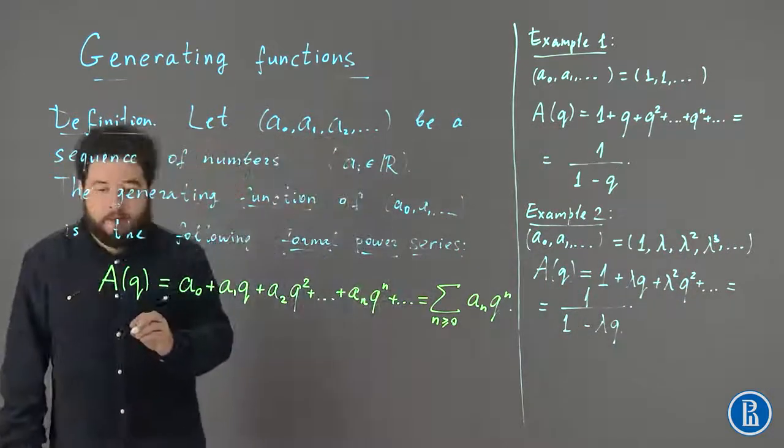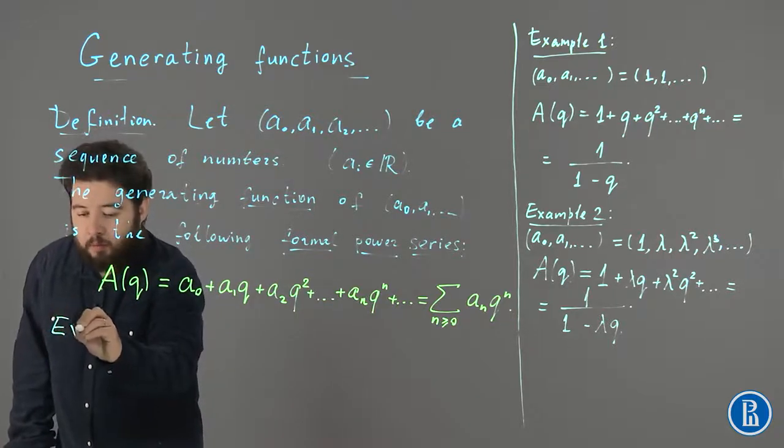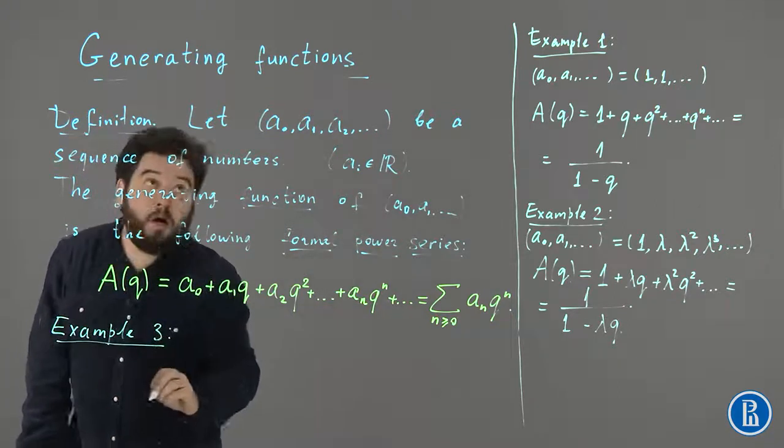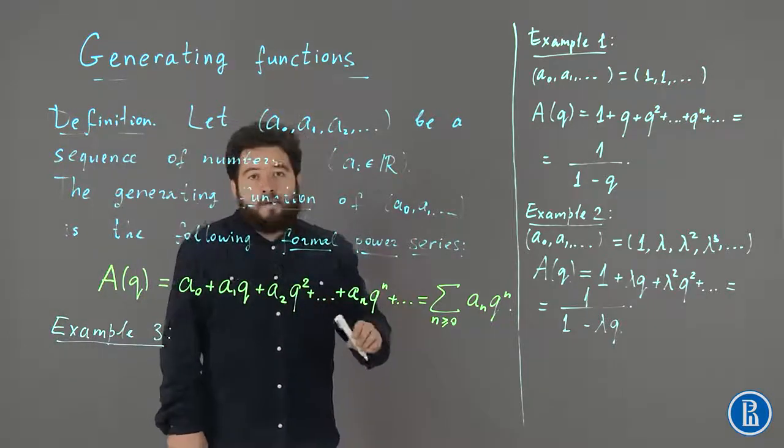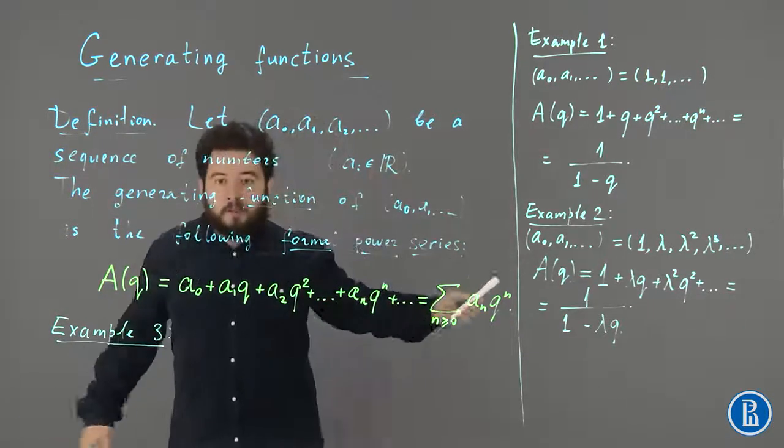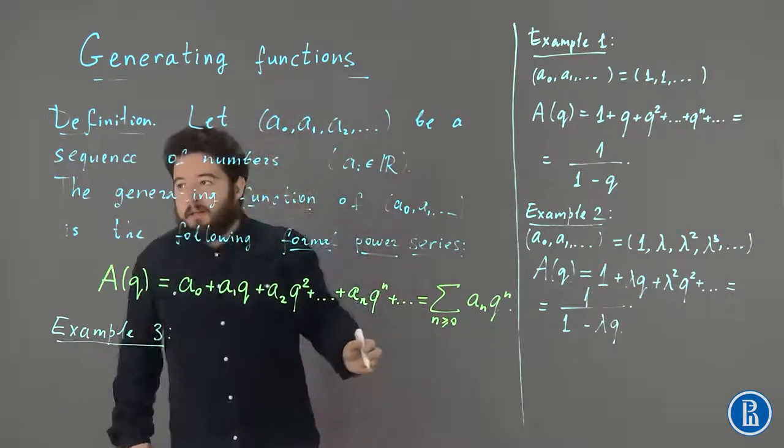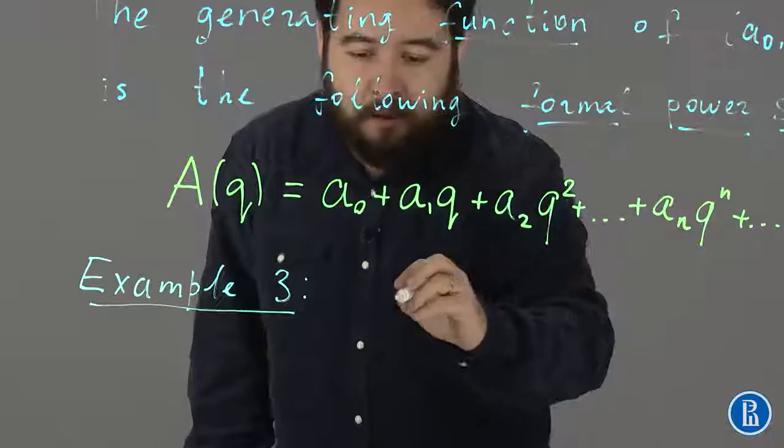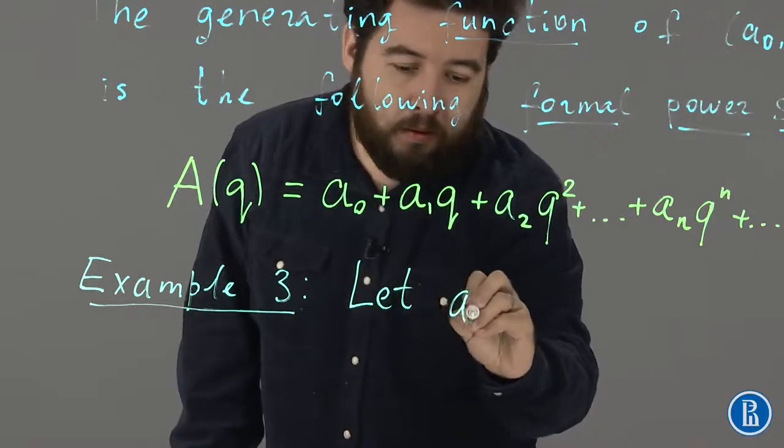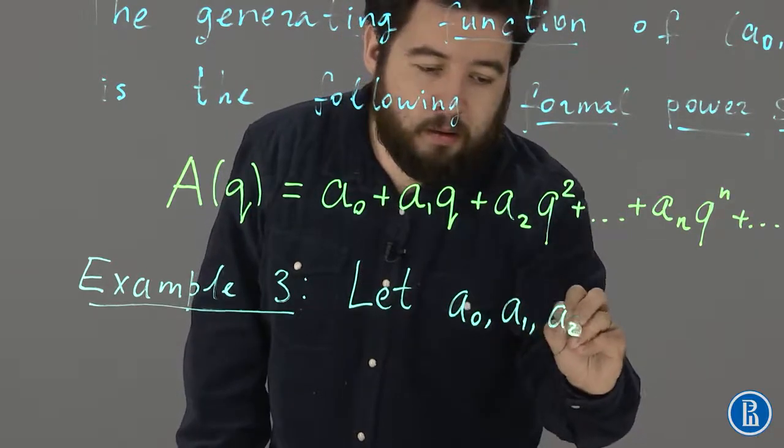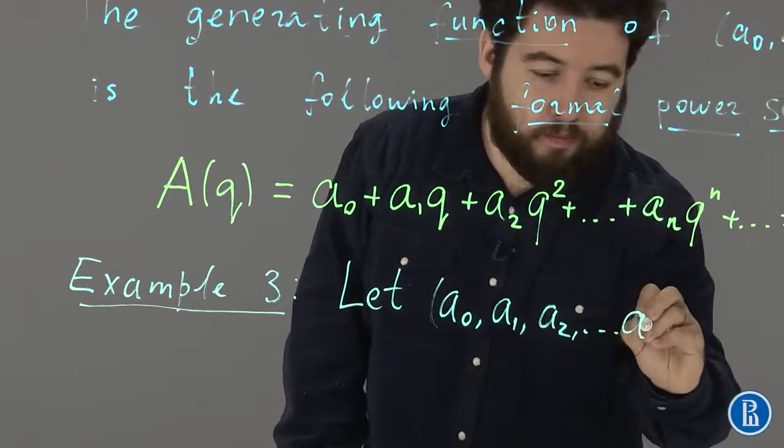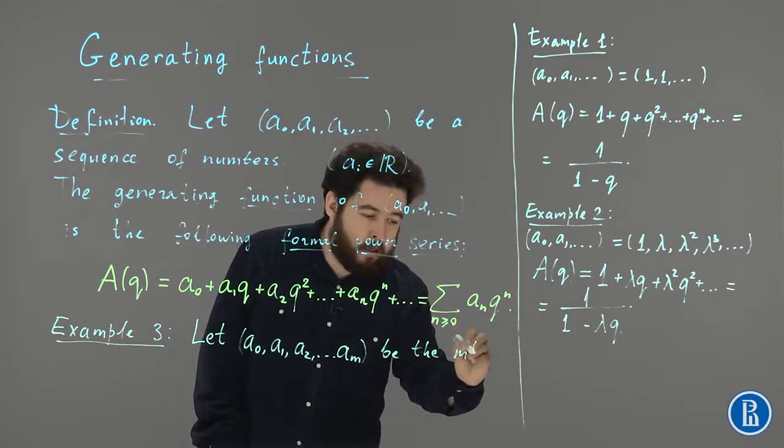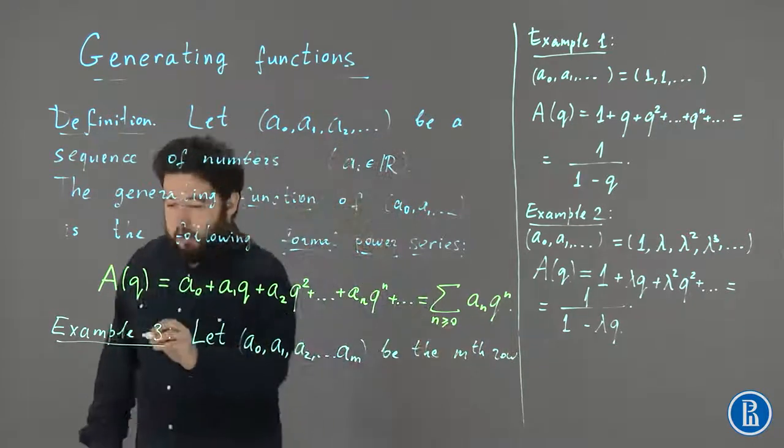Okay, here's our third example, which is somewhat more interesting. Sometimes we're dealing with infinite sequences, or sometimes we're dealing with finite ones. So, as an example, let's take the mth row of the Pascal triangle. Let A0, A1, A2, etc. A_M be the mth row of the Pascal triangle.